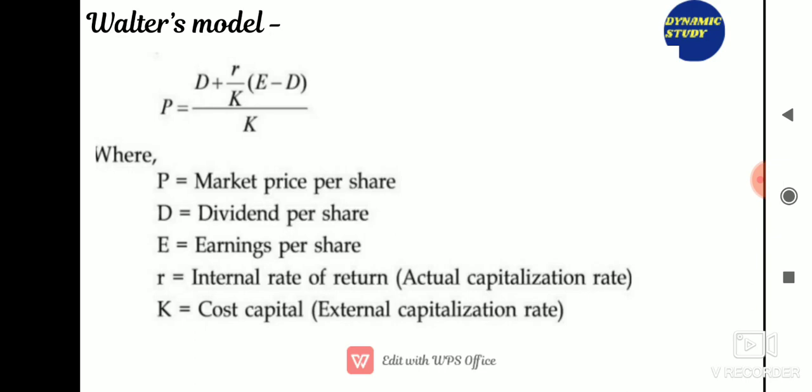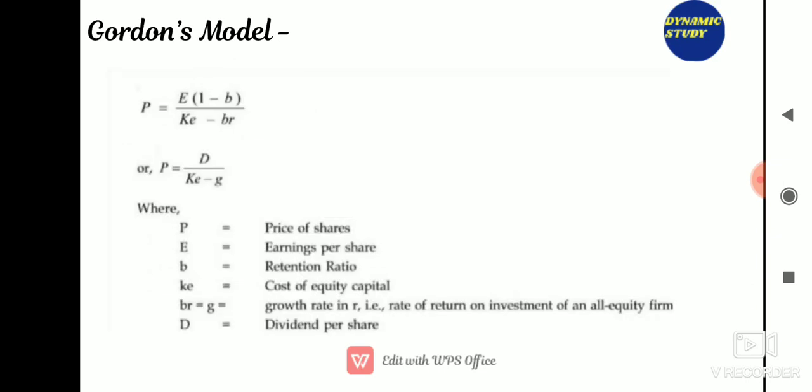Gordon's model was also developed on the lines of Professor Walter, suggesting that dividends are relevant and dividend decisions affect the firm's value. Gordon's basic valuation formula is: P = EPS × (1 − b) / (Ke − br), where P is the price of the share, EPS is earnings per share, b is the retention ratio, Ke is the cost of equity capital, and br (also represented as G) is the growth rate. This formula is very important for exam purposes.